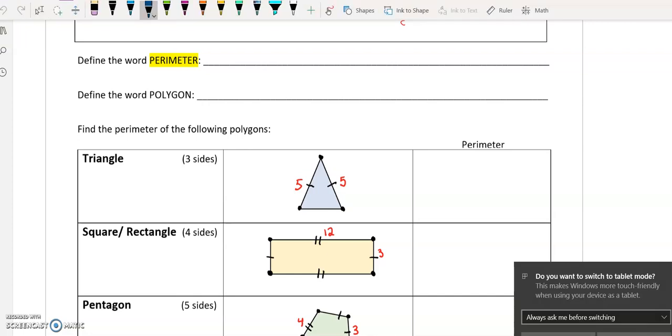Perimeter means the sum of all the sides of any given shape. So I'll put in there sum of all sides for a shape.